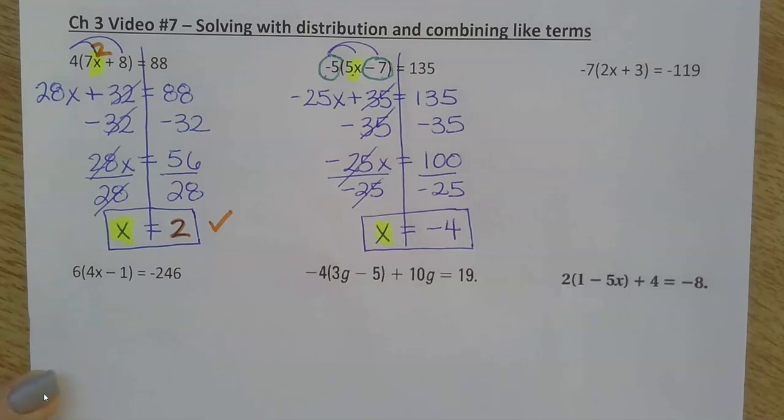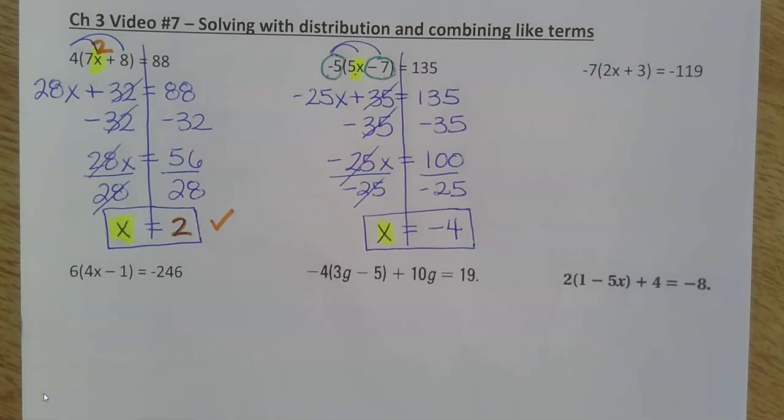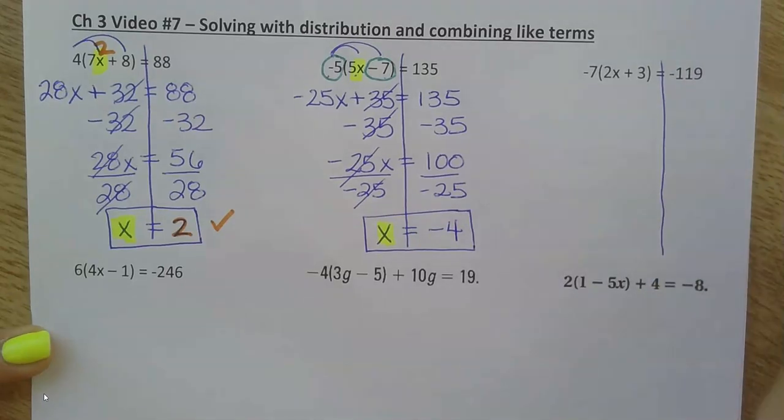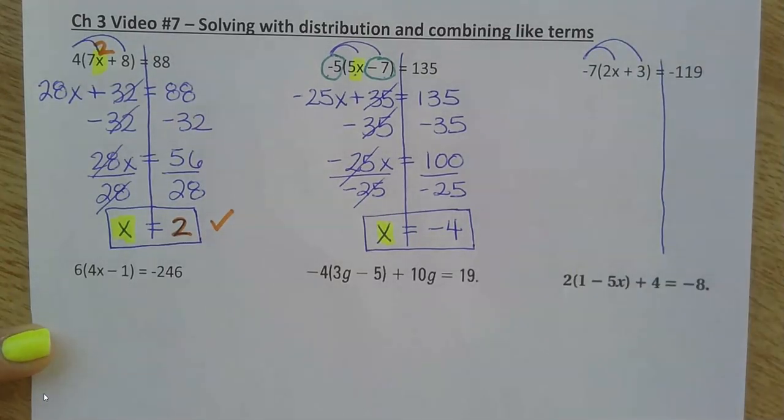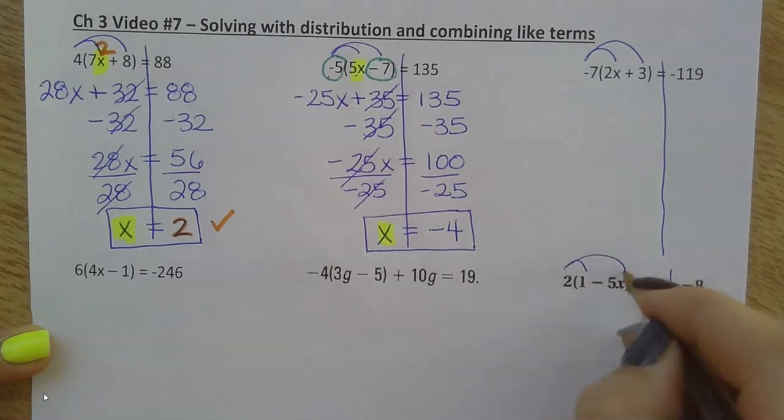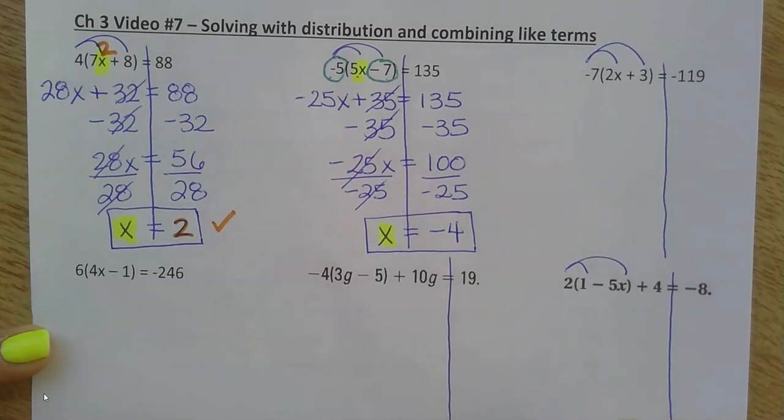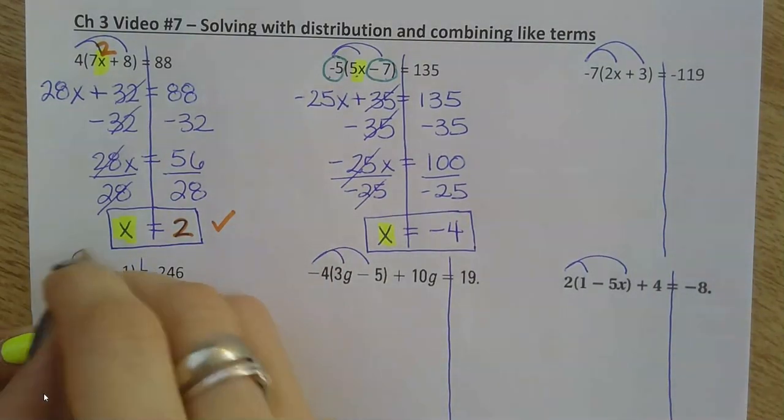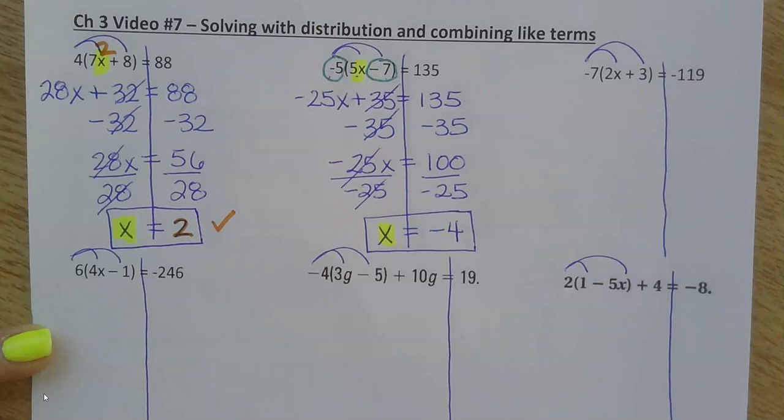Okay. There are four more problems here. I want you to work those out. Do not hit play until you've done those to the best of your ability and you're ready to check your answers. So remember we should have lines down the equal sign. Arrows for what needs to be distributed. Line down the equal sign. Arrows. And if you come across any like terms, combine those like terms before you start canceling things out.